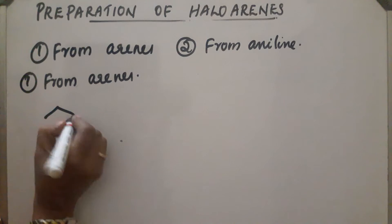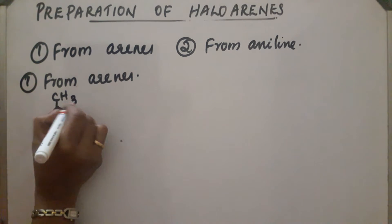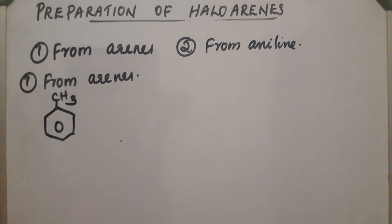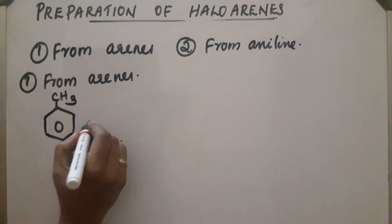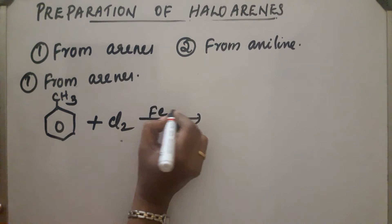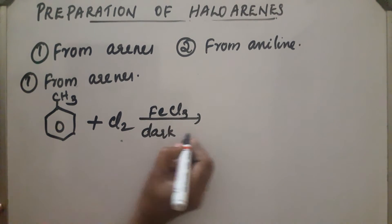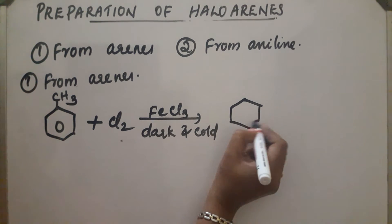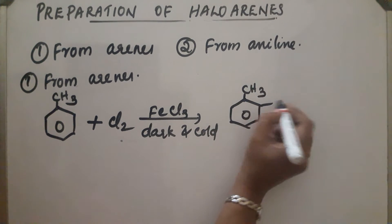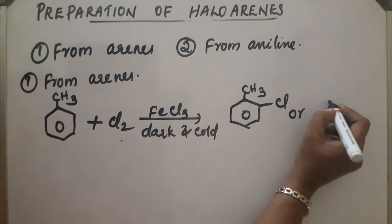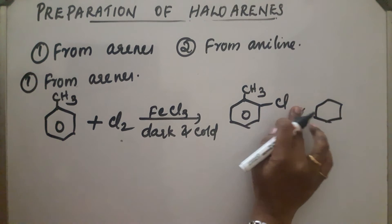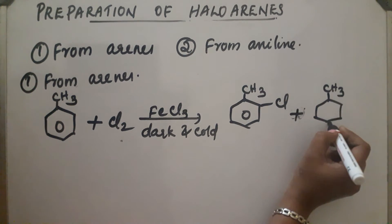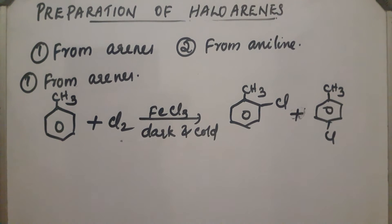In the case of toluene, para and ortho substitution takes place, and the reaction takes place in the presence of Lewis acid catalysts like FeCl3, FeBr3, etc. On direct chlorination in the presence of FeCl3, cold and dark, the reaction takes place and ortho- and para-substituted products are obtained — orthochlorotoluene plus parachlorotoluene. These two products are obtained from arenes.